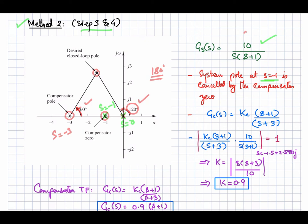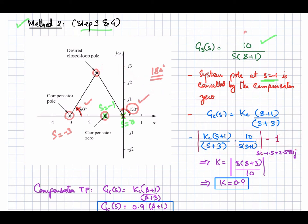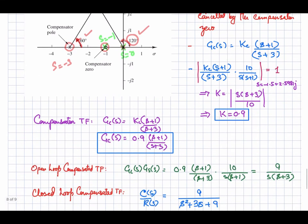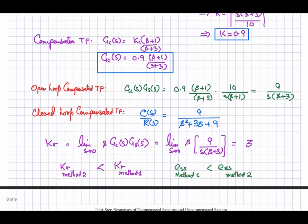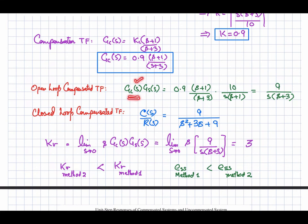The angle condition is satisfied: 120° + 60° = 180°. The compensator transfer function has zero at s = −1 and pole at s = −3. Applying the magnitude condition at the desired closed-loop pole gives Kc = 0.9. The compensator and compensated open-loop transfer function are determined accordingly.